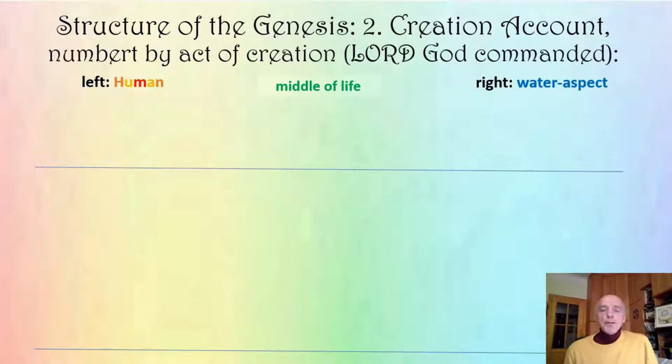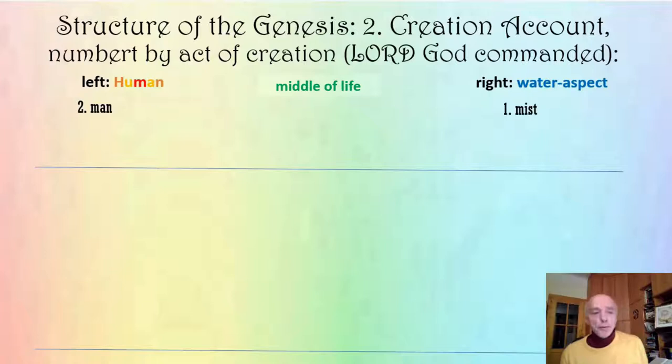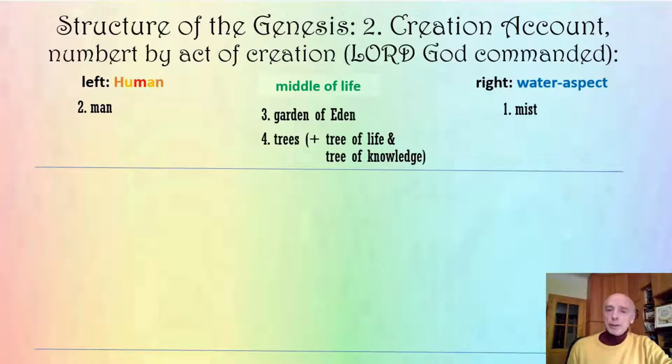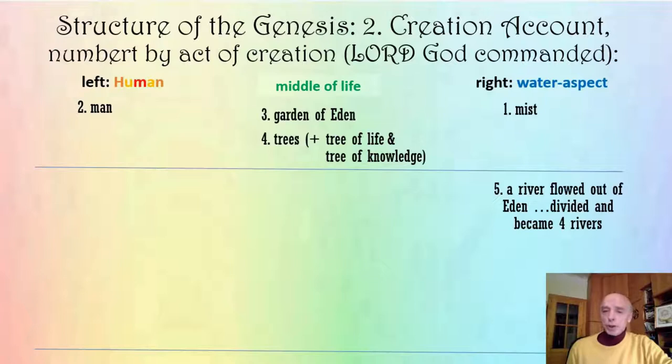Now let's move to the second creation account. Here we have no creation days, but we have the same concept of ten creation acts. On the right side we see not the light aspect but the water aspect. The first creation act starts with the mist, which was watering or moistening the earth. In the second act, man was created out of dust. In the middle, the Garden of Eden was created, and with a separate creation act, the tree of life and the tree of knowledge.